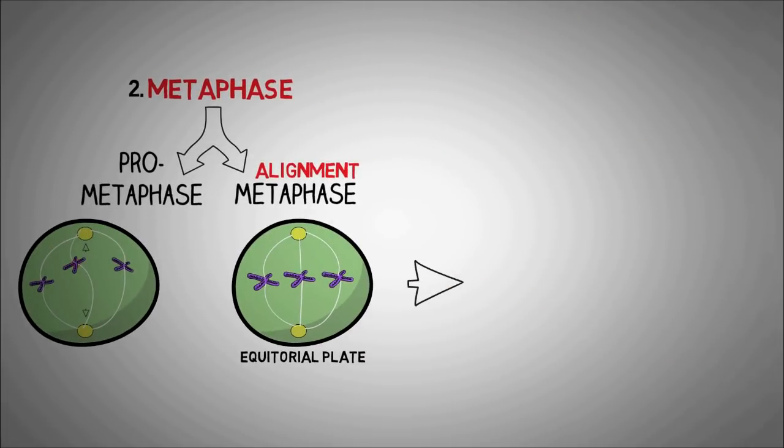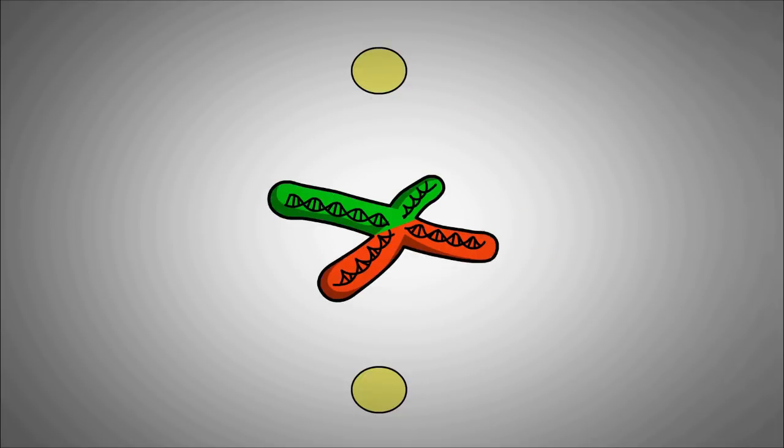Next, we have the anaphase or the actual splitting. The centrosomes that act like motors start to pull on the ropes that are the microtubules. Now since the microtubules are exerting forces on the chromosomes, the cohesions which are molecules that keep the duplicated arms of the chromosomes together are broken down.